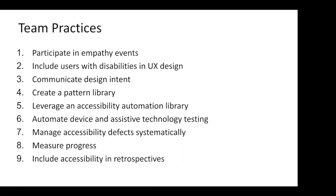There's automation you can do with device and assistive technology testing — rendering your app in a mobile simulator or testing different browser and assistive technology pairings you want to support. Manage your accessibility defects systematically: if QA is finding accessibility defects and creating tickets, those shouldn't just sit in the backlog — they're defects, no different than any other defects. You should also be measuring your progress, so you can bring it up in retrospectives and tweak your process to stop shipping accessibility issues.